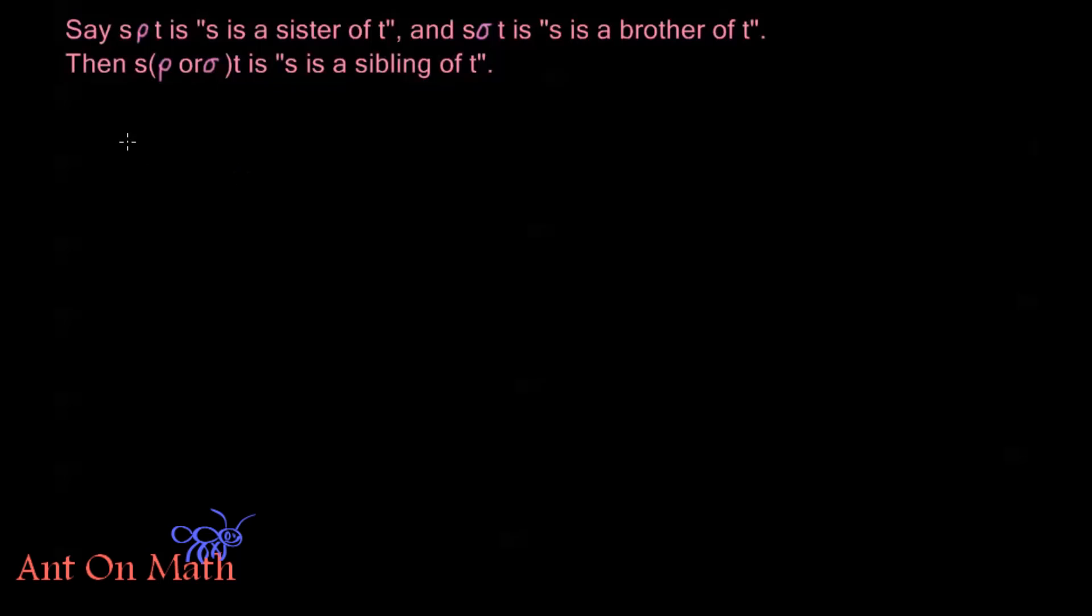Now the way that we can define these is that I would write s(ρ ∪ σ)t, and this is the one we just talked about here. This is where either ρ or σ is satisfied by s and t. Now this is equivalent to me writing the ordered pair (s,t) is an element of the set ρ union σ.